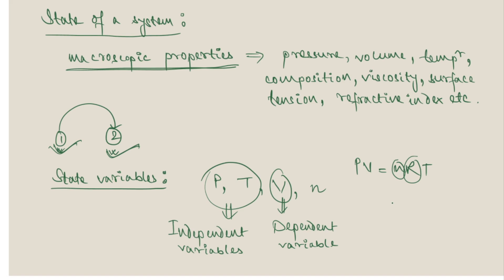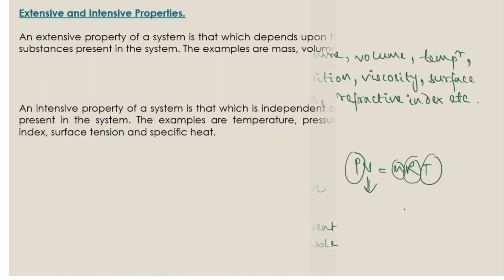Since the universal gas constant R is fixed and the number of moles is fixed, knowing pressure and temperature allows us to find volume from the ideal gas equation. Therefore, pressure and temperature are called independent variables, and volume is the dependent variable, because the volume depends on the values of pressure and temperature.